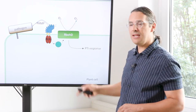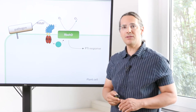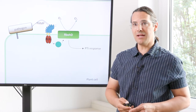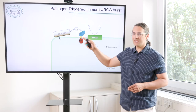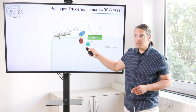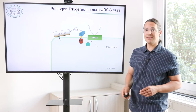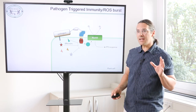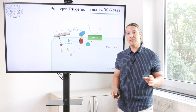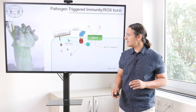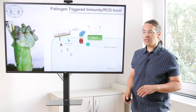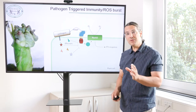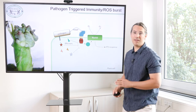This triggers pattern-triggered immunity responses of the plant. In order to be successful as a pathogen, the pathogen needs to suppress these events with the help of effectors. So we screened our effector library of Ustilago maydis and asked which effectors are able to suppress this signalling pathway.